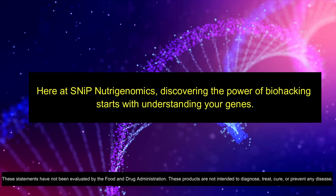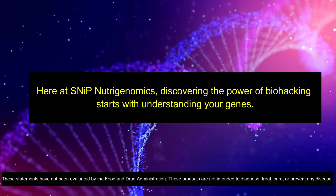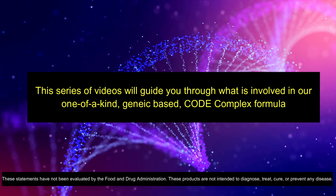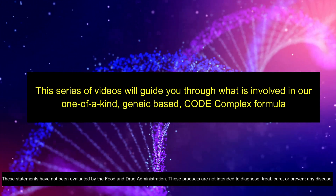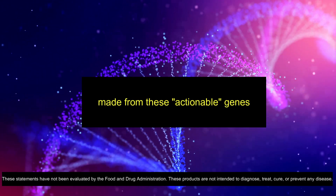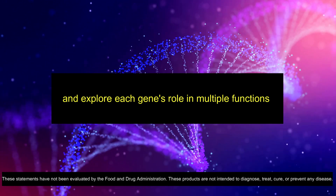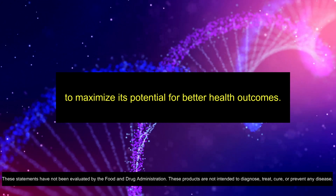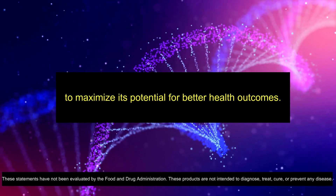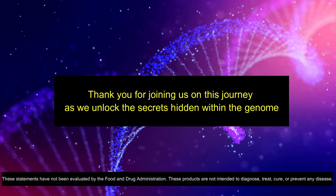Hi, this is Andy Rainville, scientific advisor for SNiP Nutrigenomics. Here at SNiP Nutrigenomics, discovering the power of biohacking starts with understanding your genes. This series of videos will guide you through what is involved in our one-of-a-kind genetic-based CODE complex formula, made from actionable genes, and explore each gene's role and multiple functions to maximize its potential for better health outcomes. Thank you for joining us on this journey as we unlock the secrets hidden within the genome to support a healthier you.